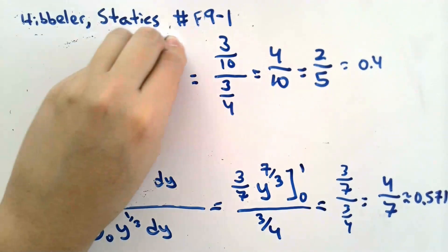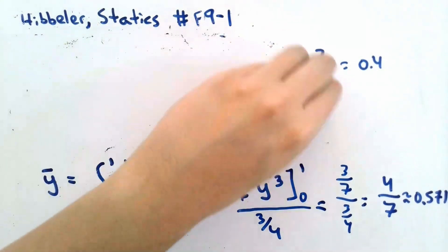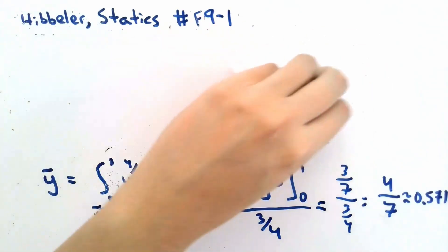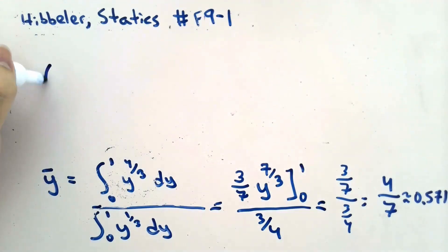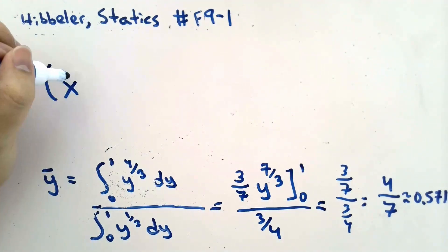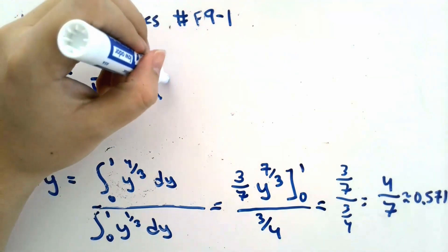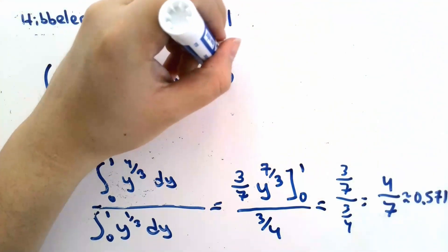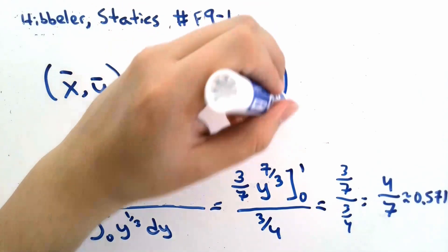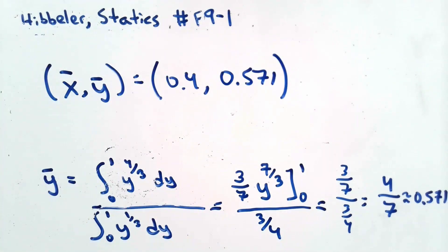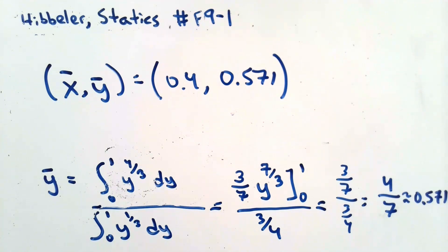Now we've found the coordinates for our centroid. The x and y coordinates of the centroid in this example are 0.4 and approximately 0.571. It doesn't matter if your differential element was taken horizontally or vertically — even though your integrals might look slightly different, you should still arrive at the same answers: 0.4 and 0.571.